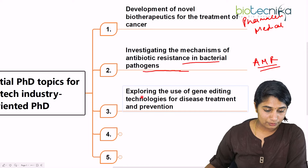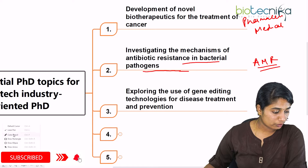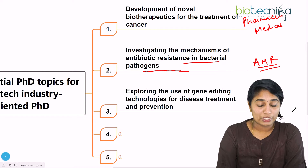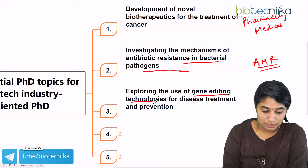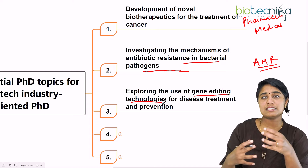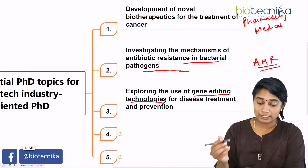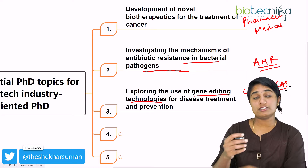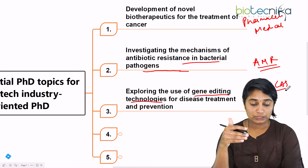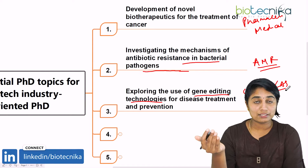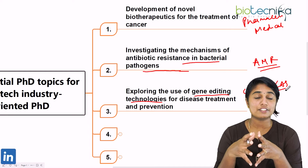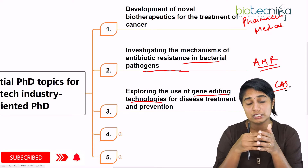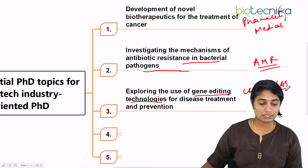The third topic is exploring the use of gene editing technologies for disease treatment and prevention. Gene editing technologies help you to manipulate a gene — for example, CRISPR-Cas. Such gene technologies can help in preventing disease from a gene editing perspective: you edit the gene already present in the human system and replace that particular gene so that the disease can be treated effectively.